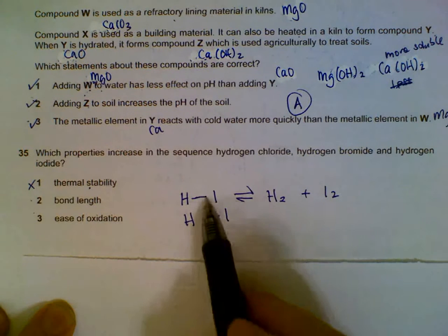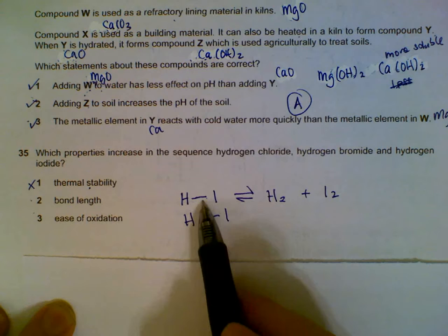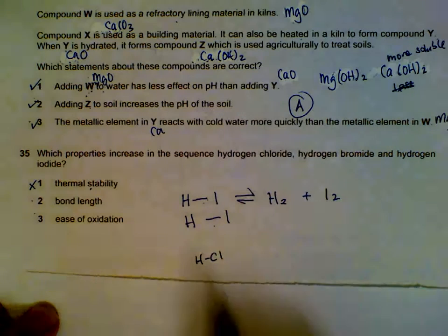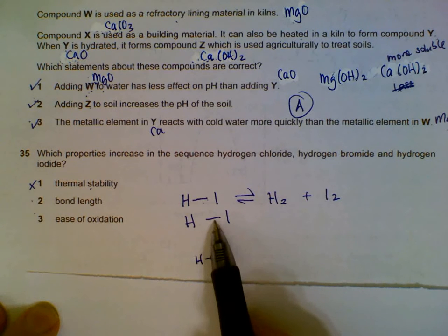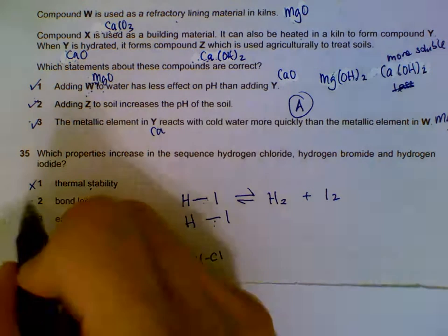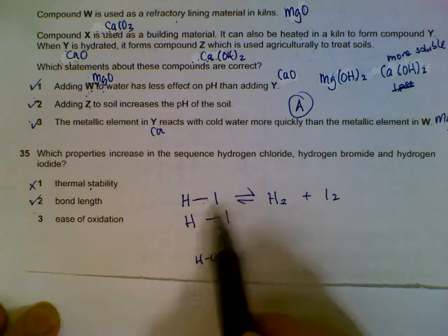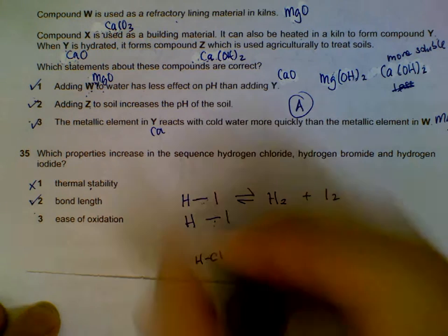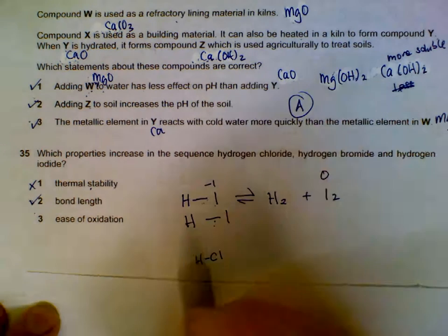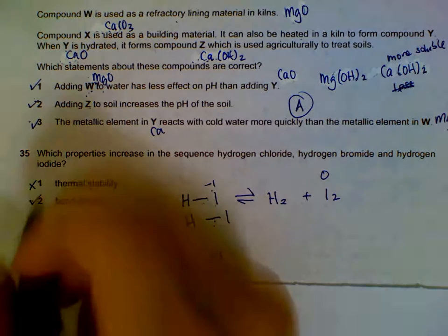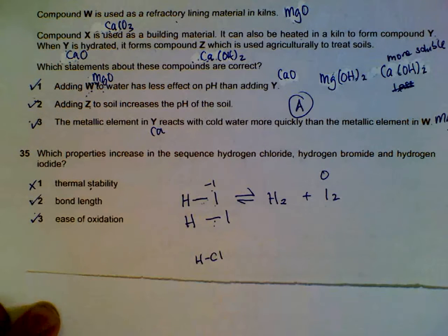This is actually due to the bond length. The bond length of hydrogen iodide is longer than hydrogen chloride. So the bond length is actually increasing, which makes it less stable. Bond length increasing is correct, and it's easier to oxidize them. Here it is minus one and here it is zero oxidation number. So it is easier to oxidize the iodides compared to the chloride. Ease of oxidation also increases. Since one is wrong, two and three must be correct.